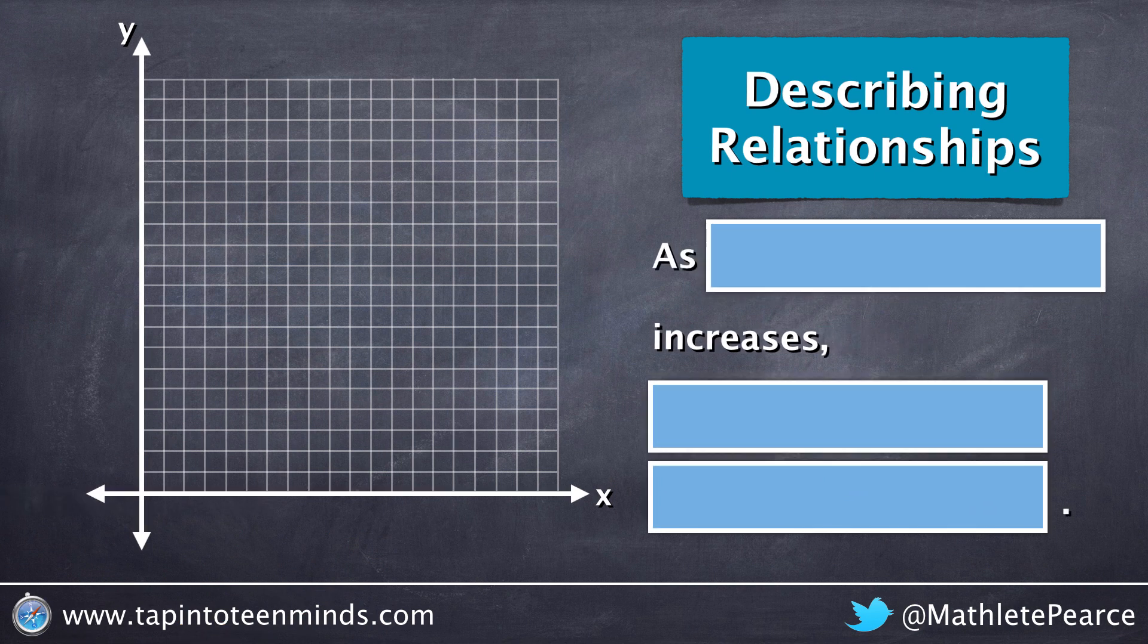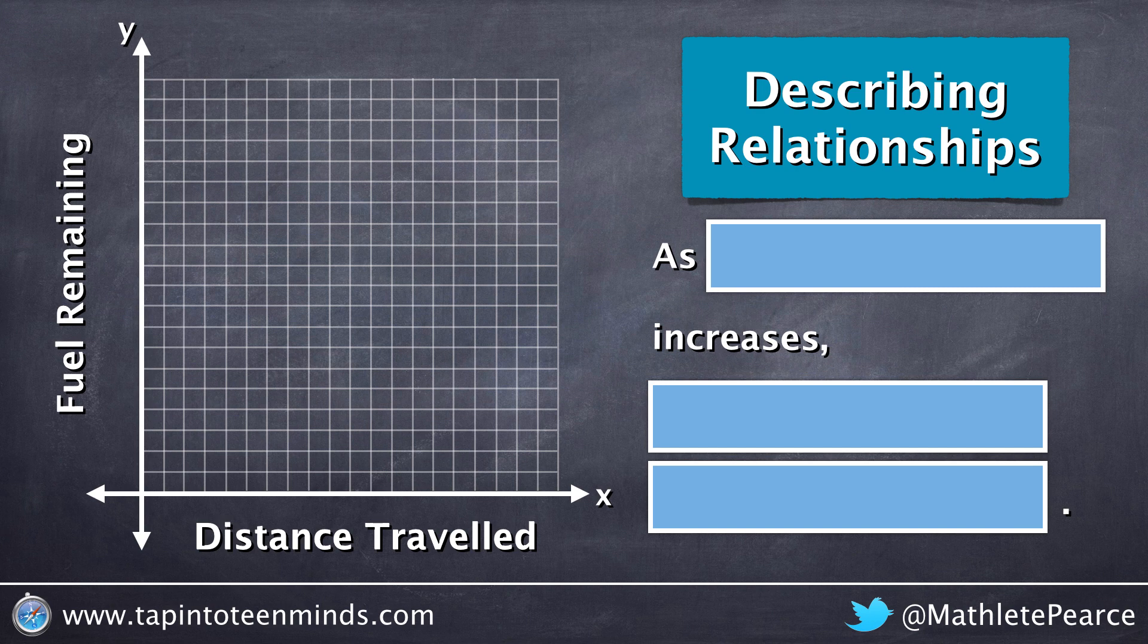Let's look at another example where the independent variable is distance traveled, and the dependent variable is fuel remaining in a gas tank.